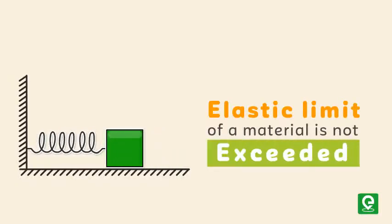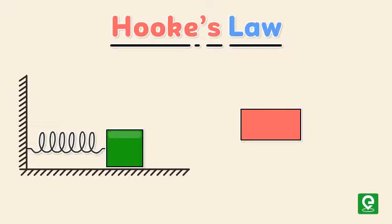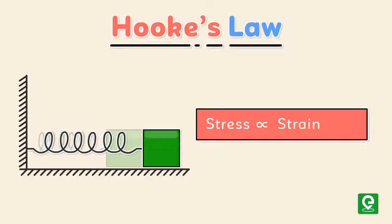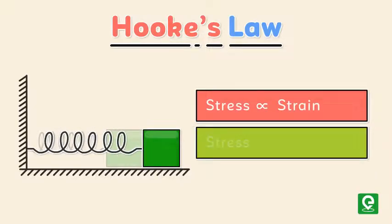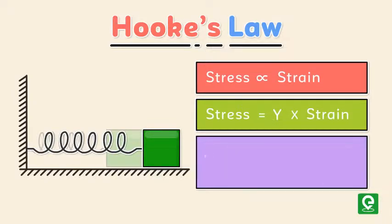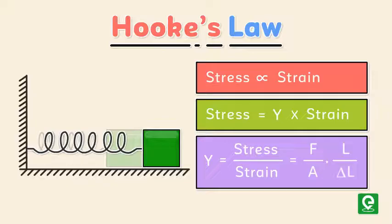If the elastic limit of a material is not exceeded, then from Hooke's law, stress is directly proportional to strain, or stress equals Y times strain. This implies Y is equal to stress upon strain, which equals force times length divided by area times change in length.